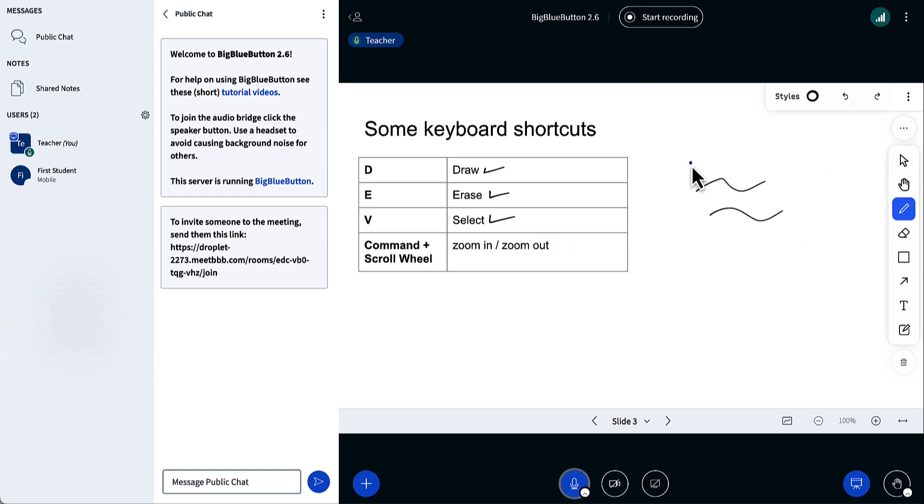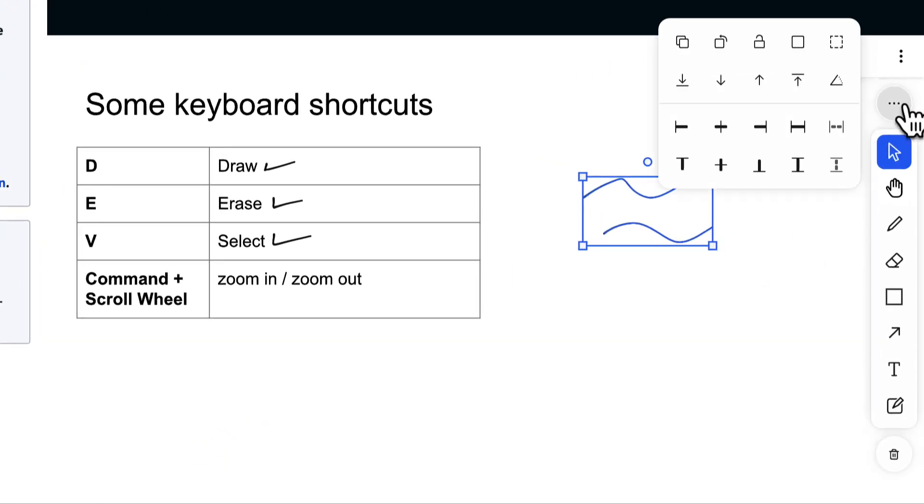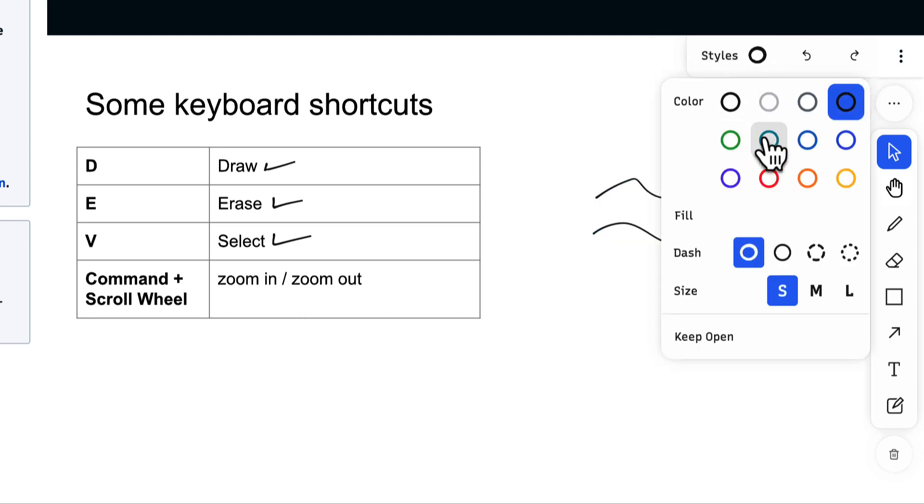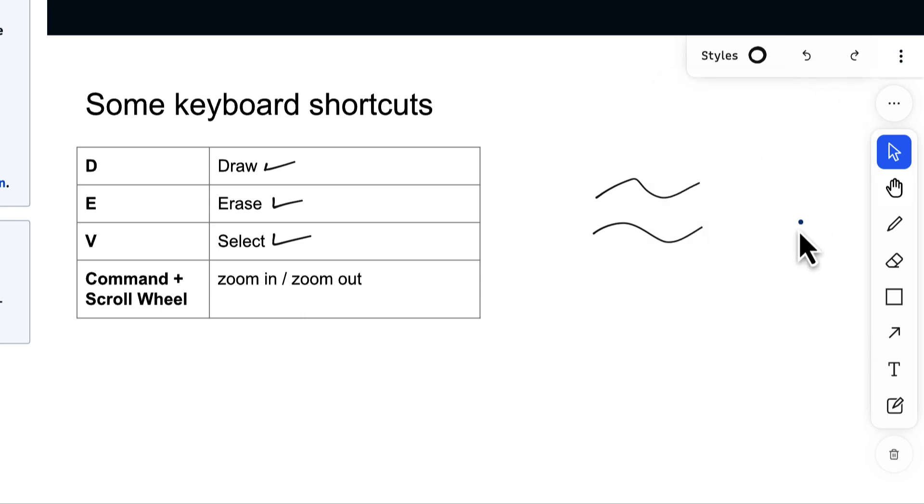If I choose a series of objects, I've got some arrangement tools here, so I can arrange them all to align by the center. With styles, I can change colors, fill shapes, change the line, and change the size. Of course, you have undo and redo. All the capabilities you'd expect in a modern whiteboard.